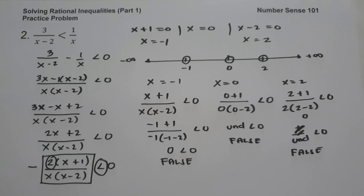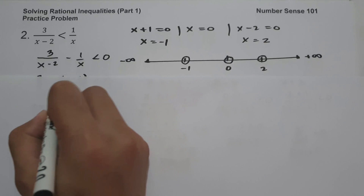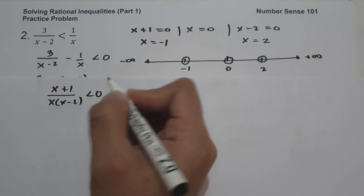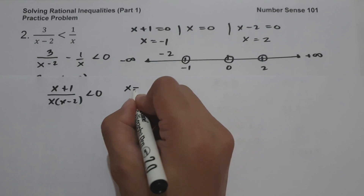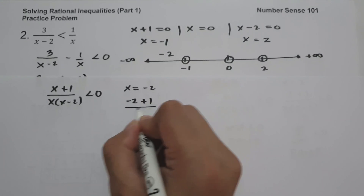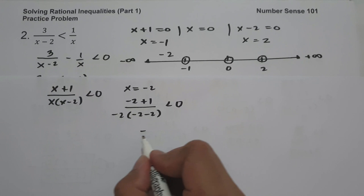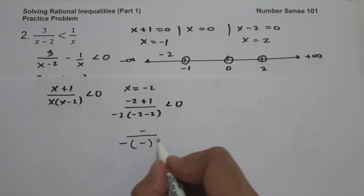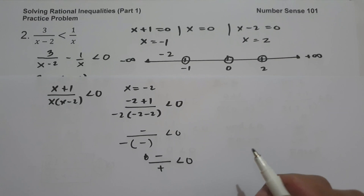Now let's check which regions are included. Testing a number less than negative 1, say x equals negative 2: negative 2 plus 1 is negative, and negative 2 times negative 2 minus 2 is negative times negative, which is positive. So negative over positive is negative, less than 0 — this is true. I'm going to shade this region as part of our solution.